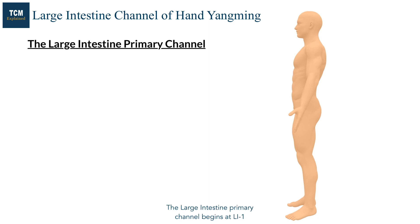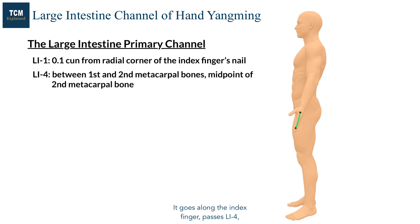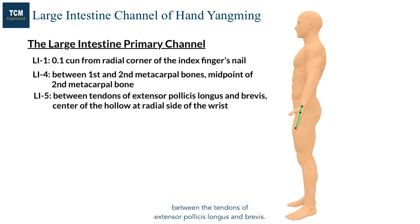The large intestine primary channel begins at LI1 at the radial side of the tip of the index finger. It goes along the index finger, passes LI4 between the first and second metacarpal bones.